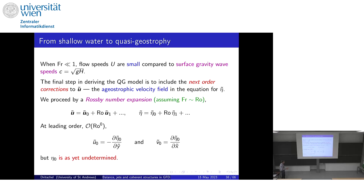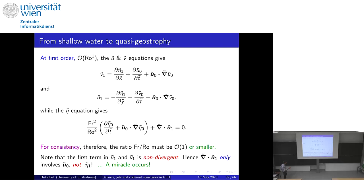We take the velocity and expand it: there's a leading-order part, then a correction of order Rossby number — ũ₁ is also order one but the small parameter sits in front. Likewise for every other field being expanded. At leading order in Rossby number, geostrophic balance comes out of the equations: you get the x and y velocity components in terms of derivatives of the leading-order displacement η̃₀. At first order in Rossby number, going back to the momentum equations and collecting terms proportional to first order, you get v₁ on the left and terms depending on leading-order velocity.